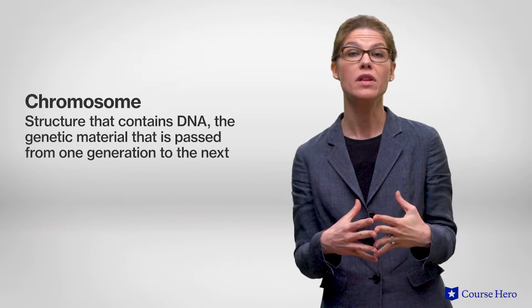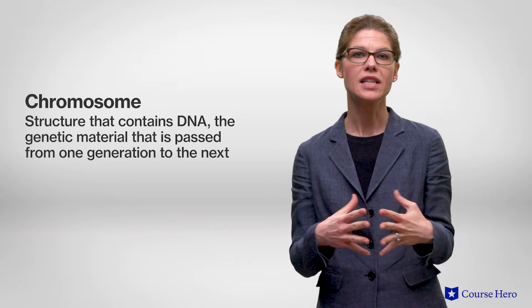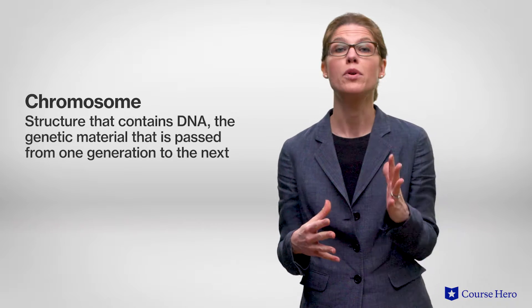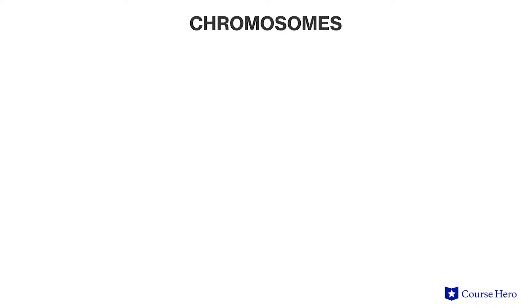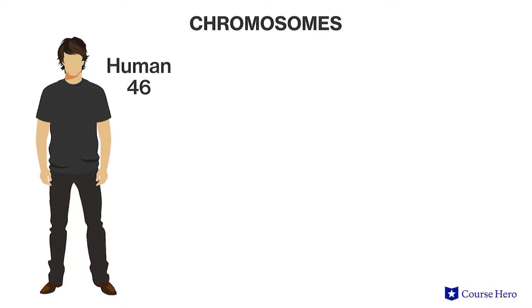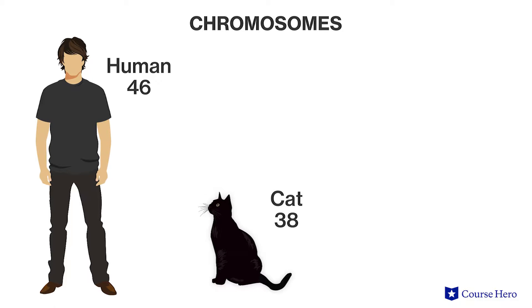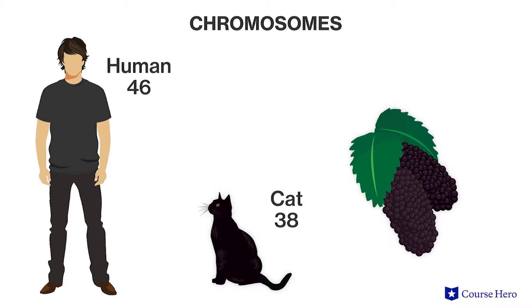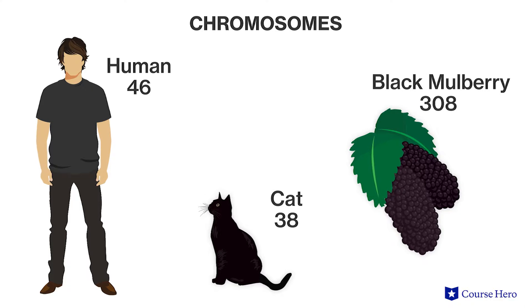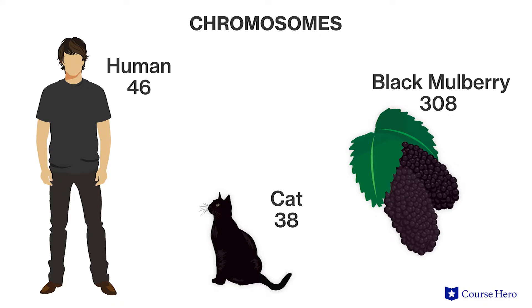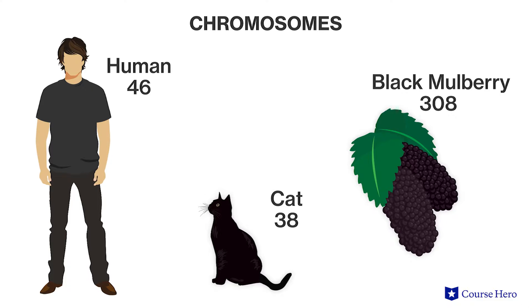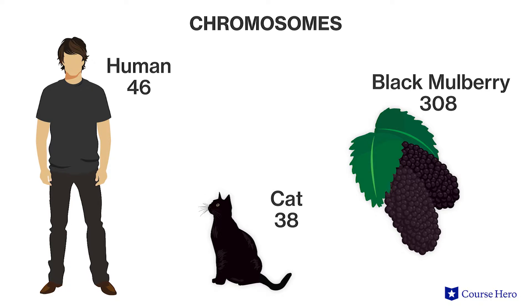Genes are located on chromosomes — structures within the nucleus of a cell that consist of DNA wrapped around proteins. Living things have varying chromosome numbers. For example, humans have a total of 46 chromosomes, cats have 38, and the black mulberry plant has 308. Chromosome number is not an indicator of how complex an organism is.